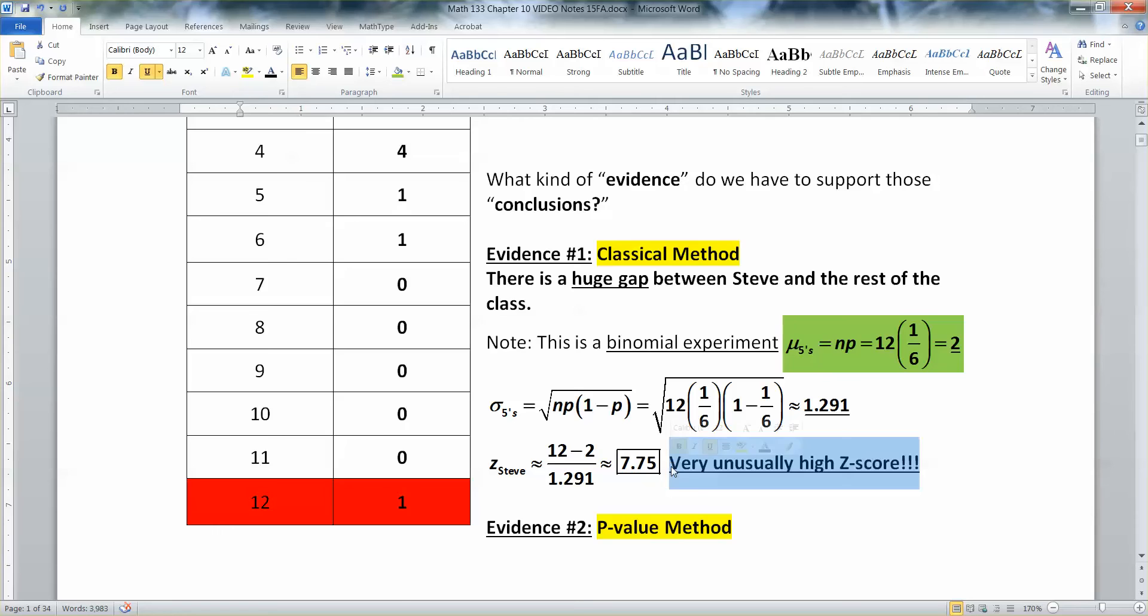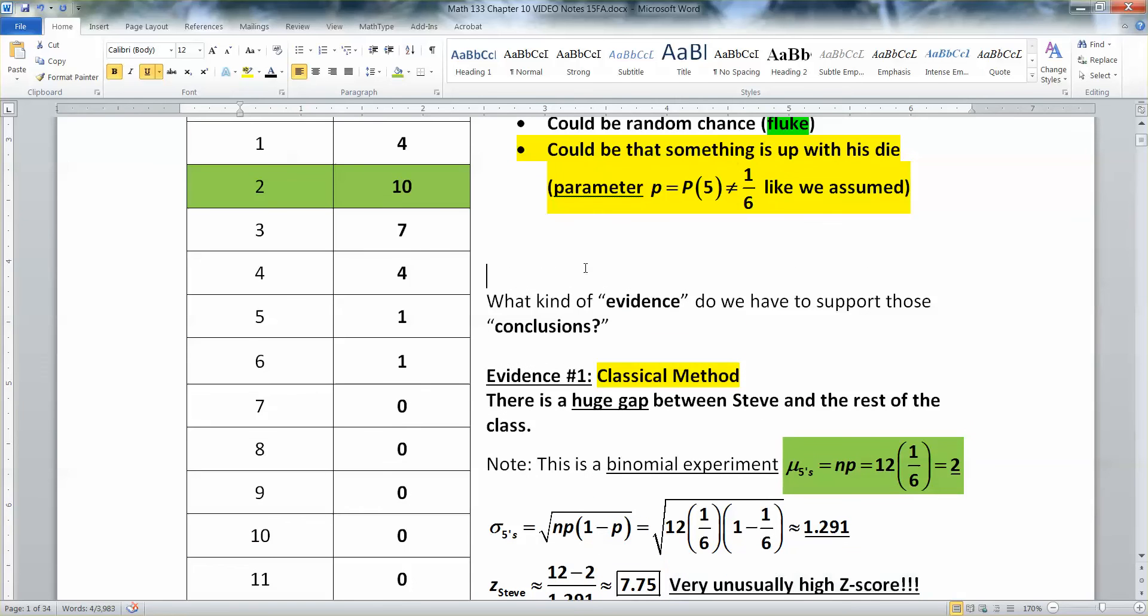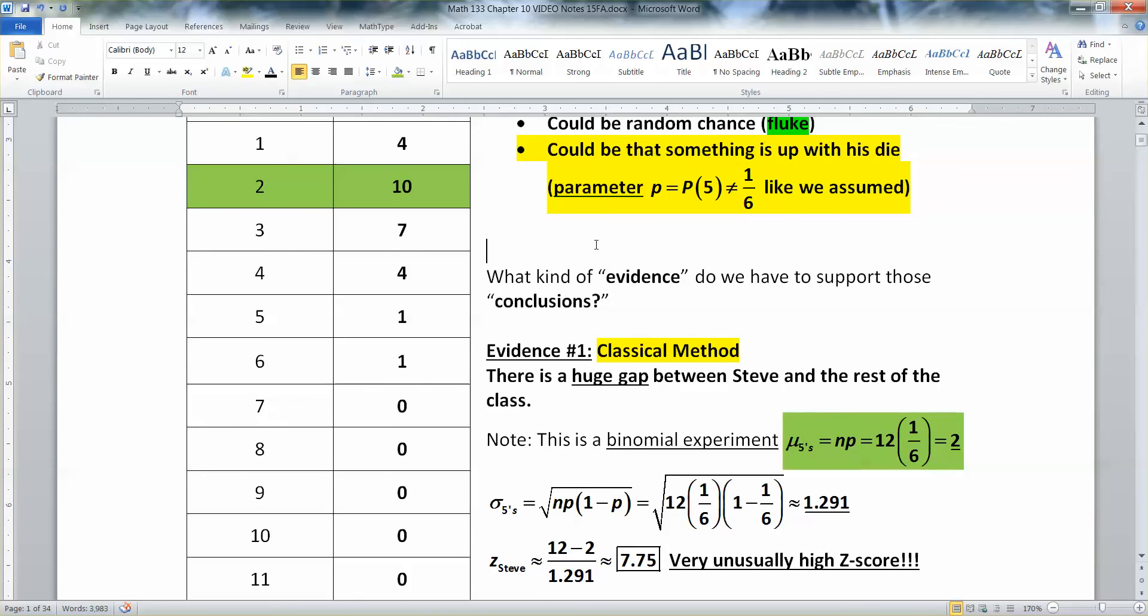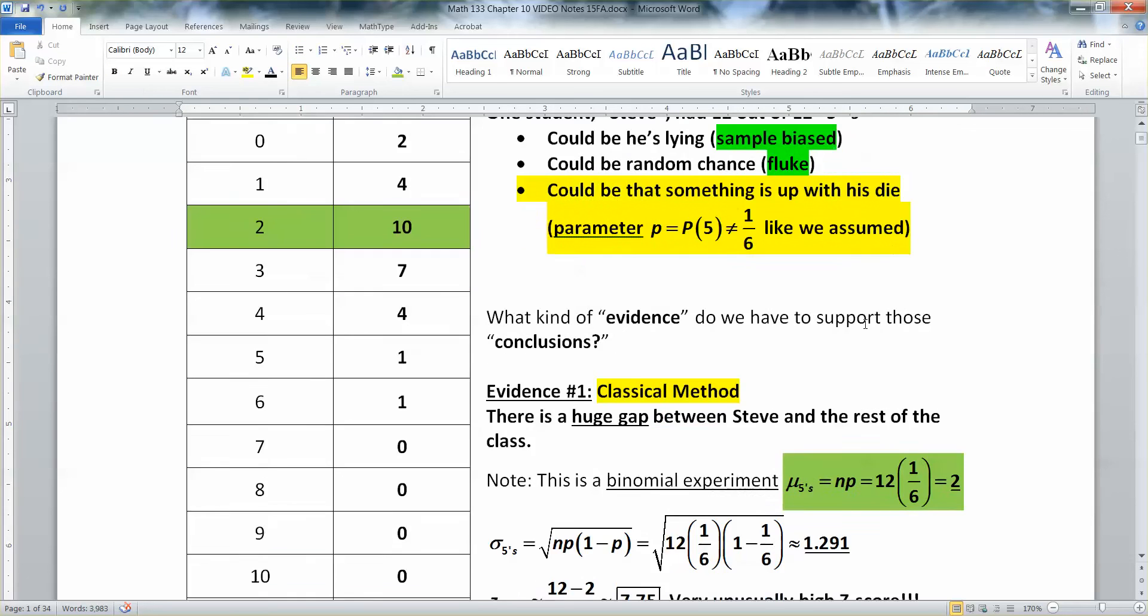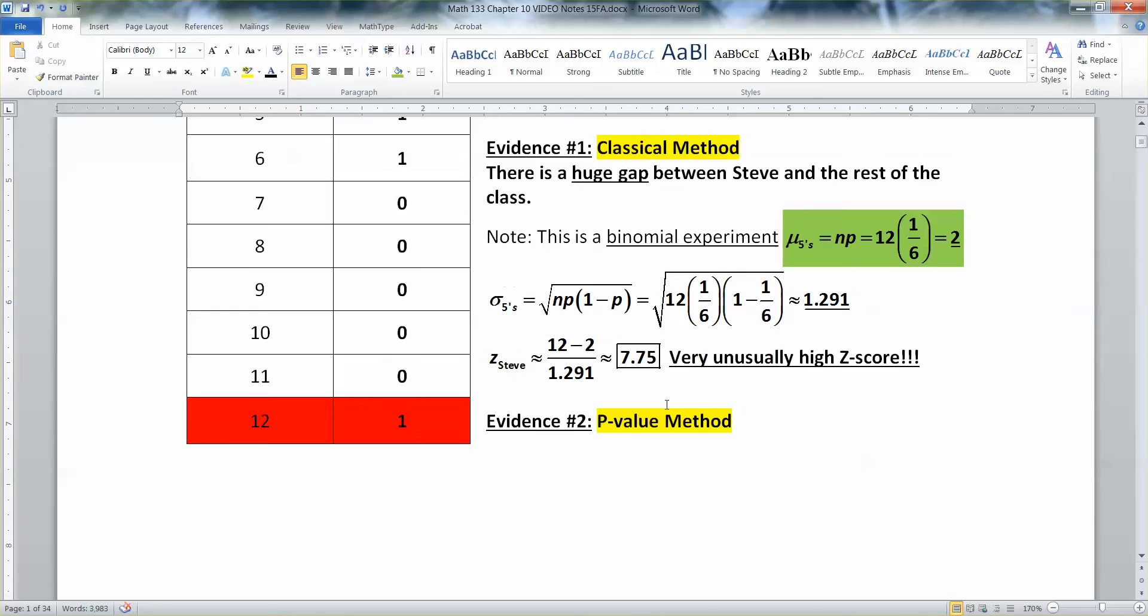So we think something's going on. We think for him, for whatever reason, his die was not a sixth. Something's happening here. Because we're assuming that he's not lying to us because he's a nice person. And it's not random chance. Well, we'll show that one in a second. But something fishy is happening. Now, what about the random chance? It's possible.